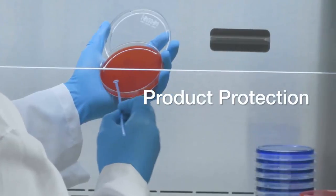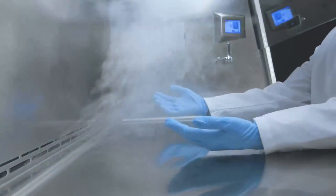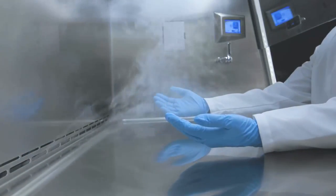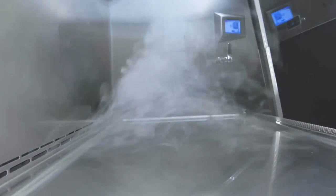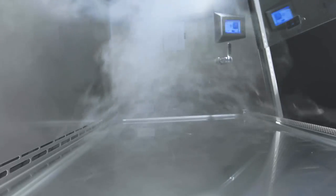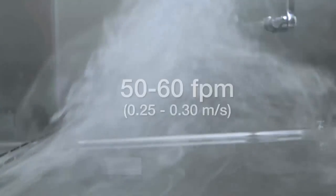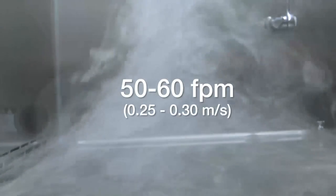A BSC provides product protection by flowing HEPA filtered air downward through the cabinet. Downflow air is laminar or unidirectional and is ISO 5 or better in quality. Downflow air may be of different velocities depending on the model of the cabinet, but is typically between 50 and 60 feet per minute.